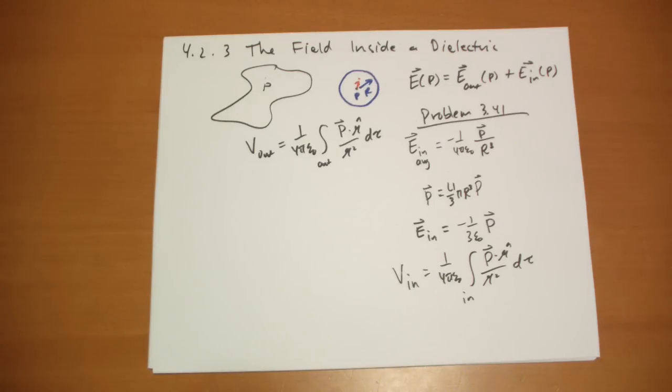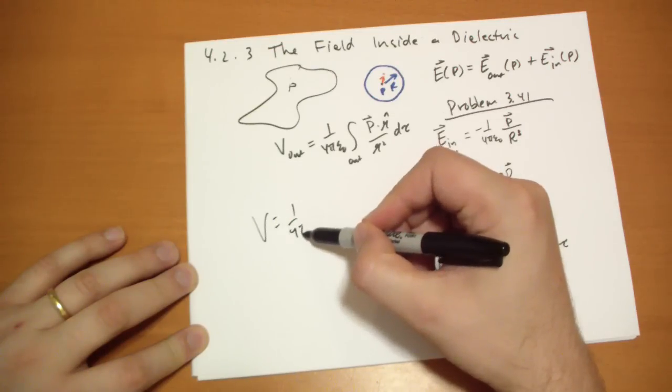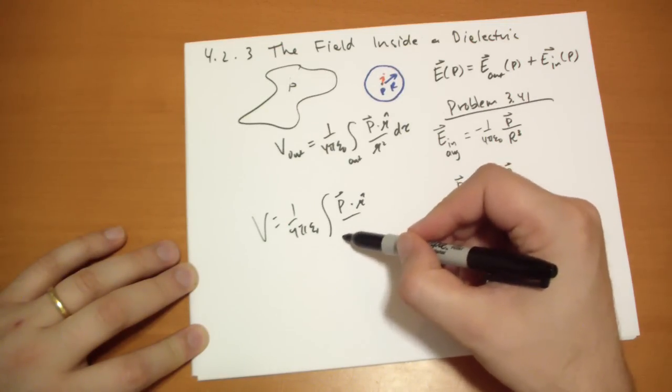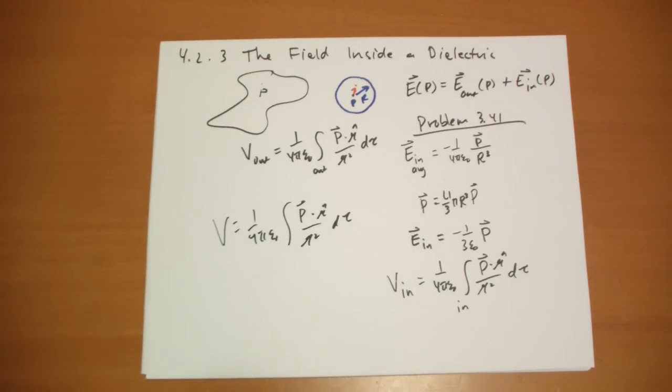And so you're left with the result that the potential for any given point if you're averaging over these spheres will be determined by this formula: 1 over 4 pi epsilon 0 integral of the polarization dot r hat over r squared d tau. So the thinking here is kind of subtle but the two key parts: